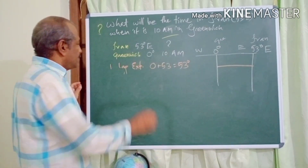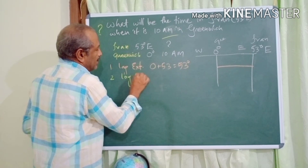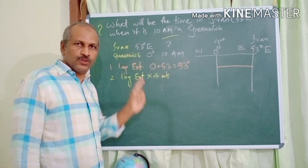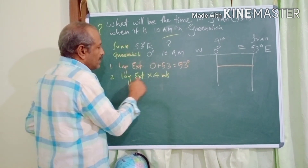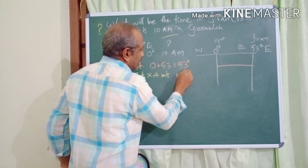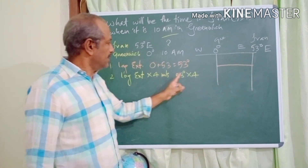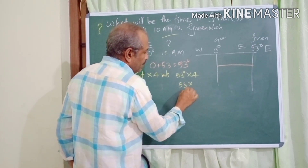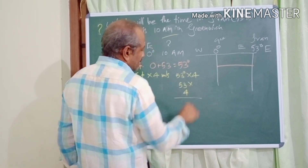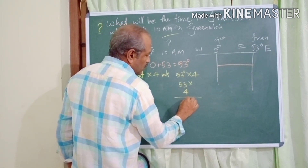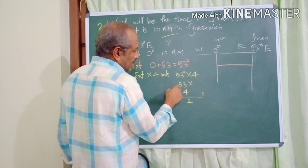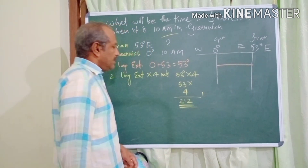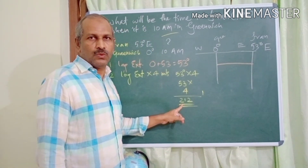The next step is longitudinal extension multiplied by 4 minutes. We know that it takes 4 minutes to rotate 1 degree. So longitudinal extension is 53 degrees multiplied by 4 minutes. 53 into 4: 3 into 4 is 12, carry 1; 4 into 5 is 20, plus 1 is 21. So the total minutes is 212.